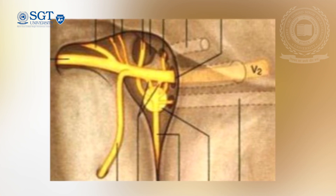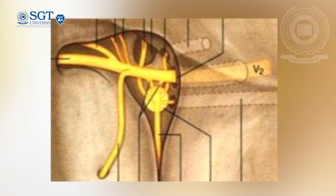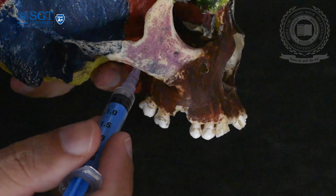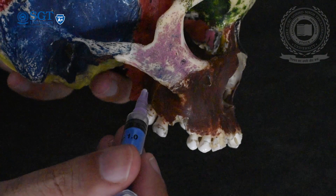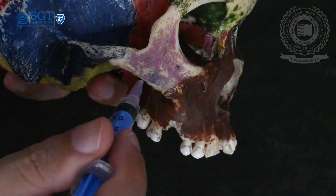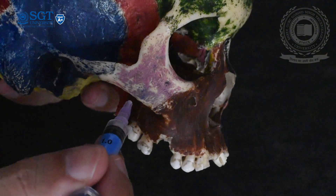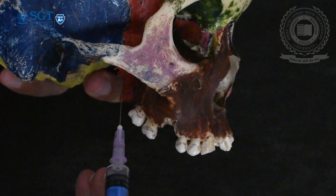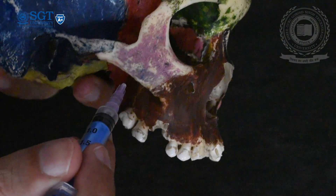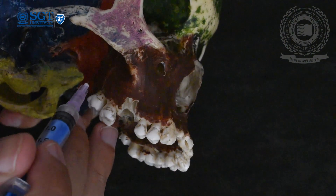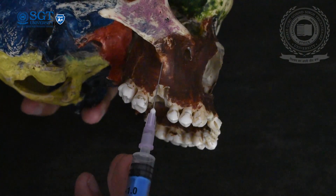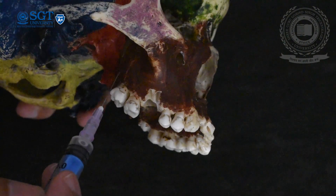The maxillary nerve block is used for blockade of the entire maxillary nerve, providing anesthesia across all its distribution and branches. Our target is to reach the needle into the pterygopalatine fissure region — this is the target area of the pterygopalatine ganglionic block. To achieve this, certain landmarks must be identified, and these landmarks are very similar to the posterior superior alveolar nerve block routinely given in this region.